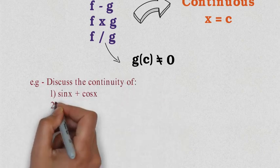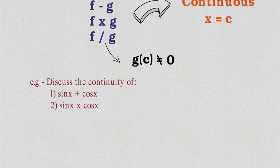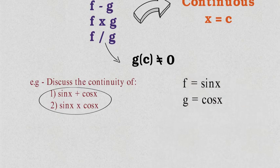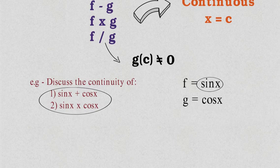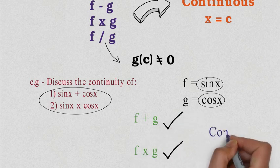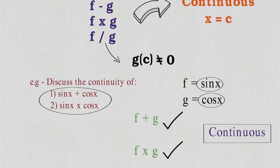Let's do a question applying this theorem: discuss the continuity of sin x + cos x and sin x · cos x. Here f(x) = sin x and g(x) = cos x. Sin x is continuous on its whole domain, and cos x is also continuous on its whole domain — both are continuous on the entire real line. So by Theorem 1, f + g and f · g will also be continuous everywhere.